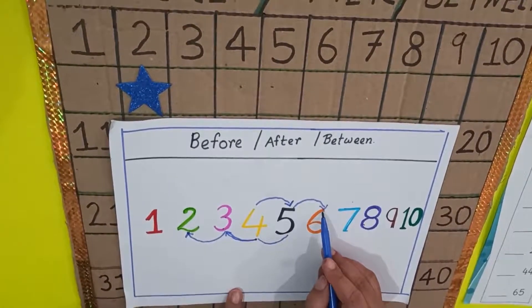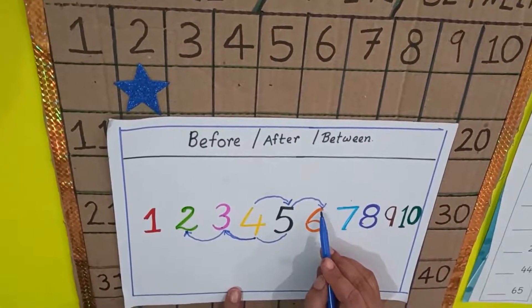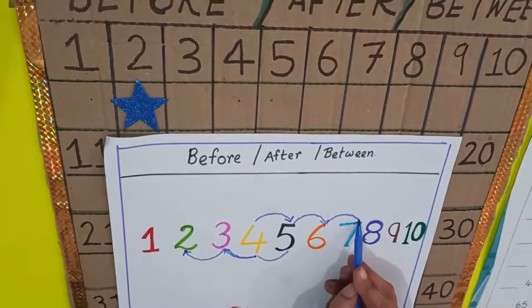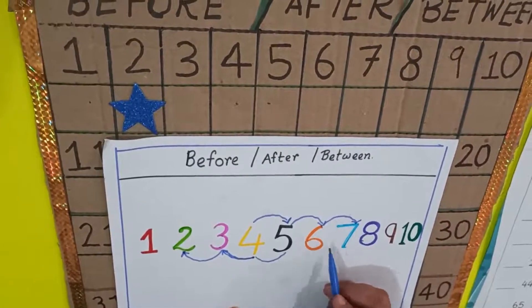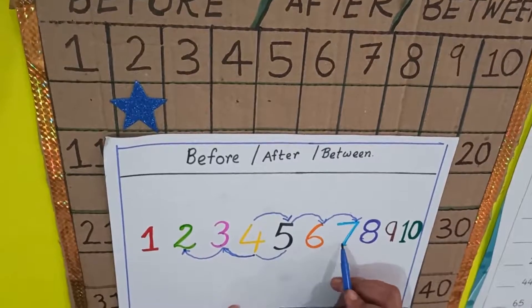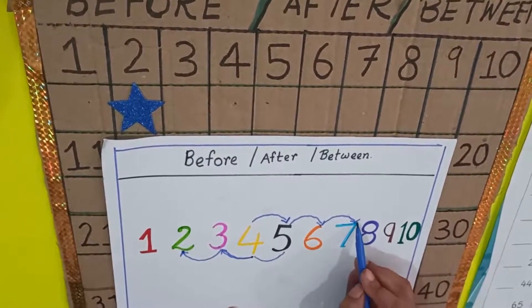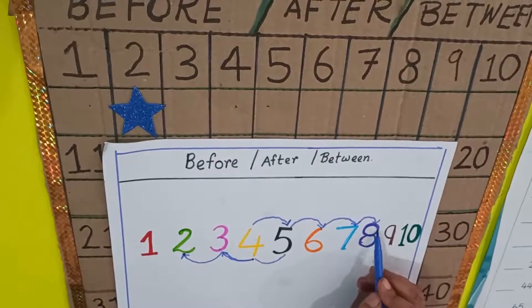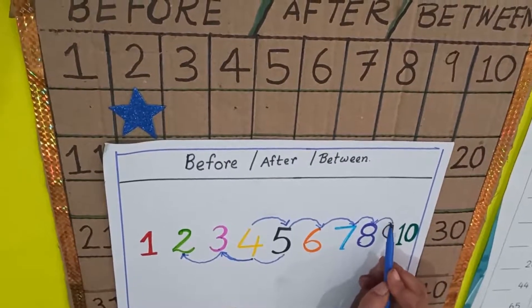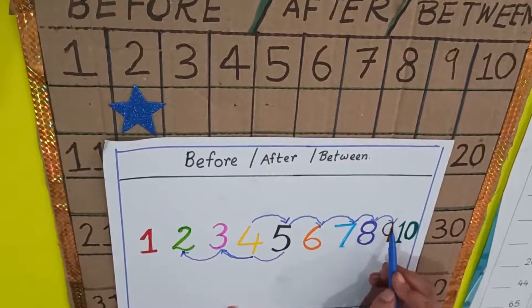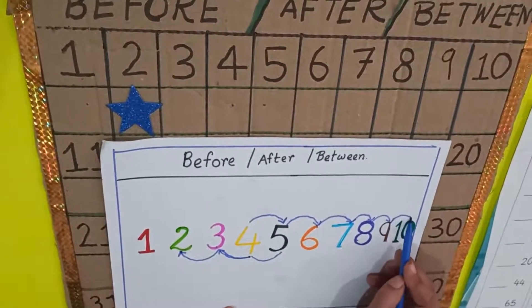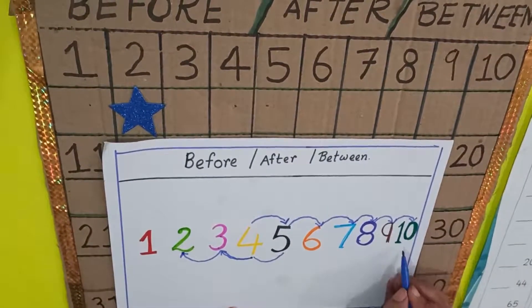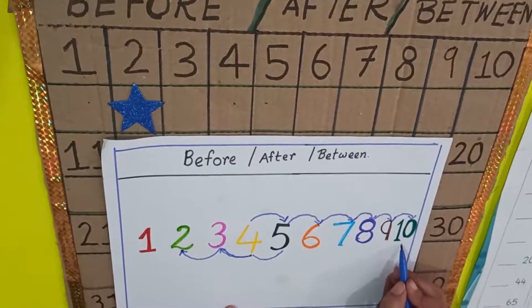This is number six. Who is after six? Seven. Who is after seven? Eight. Who is after eight? Nine. And who is after nine? Ten. Very good! And this is number ten.